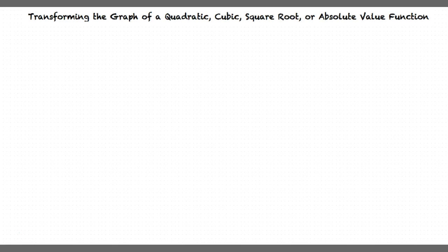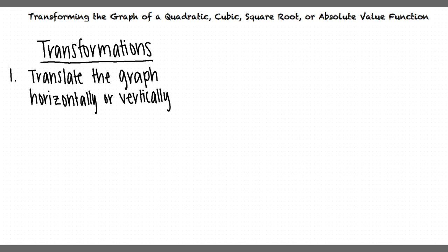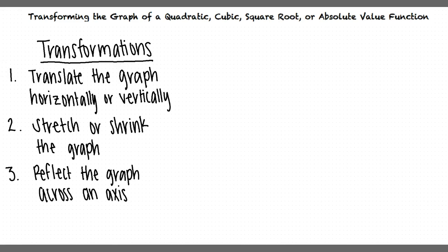There are a few different types of transformations that are possible when looking at graphs of functions. We can translate the graph horizontally or vertically, stretch or shrink the graph, and reflect the graph across an axis.